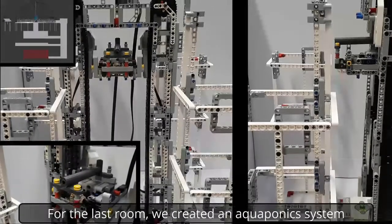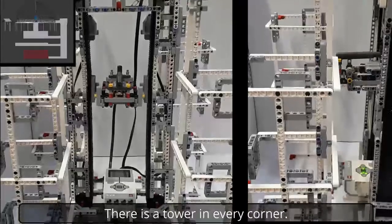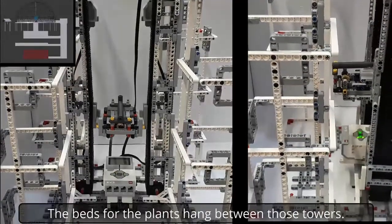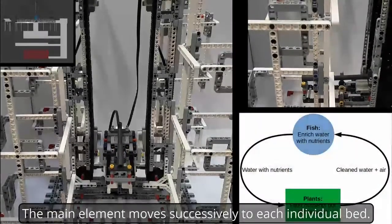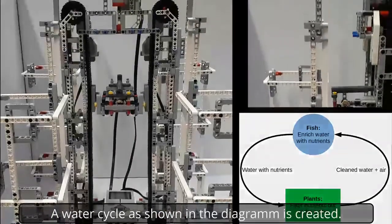For the last room we created an aquaponic system that combines fish farming and the cultivation of plants. There is a tower in every corner. Each tower is divided into several levels. The beds for the plants hang between those towers. The main element moves successively to each individual bed. A water cycle as shown in the diagram is created.